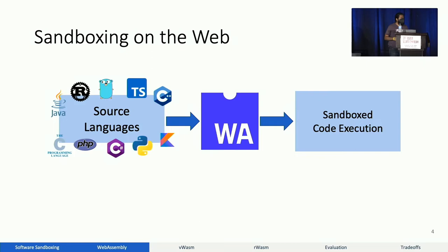People would like to compile all kinds of code from all different languages and still be able to run it in their browser. But this code is generally untrusted — it's the web, after all. And thus, WebAssembly was born. WebAssembly is intended to be safe for sandboxing. Indeed, it promises lightweight, safe, and fast execution of untrusted code on the web.